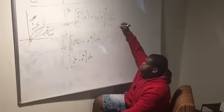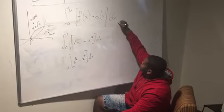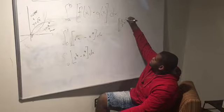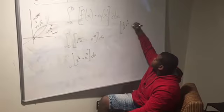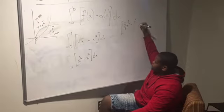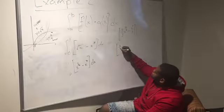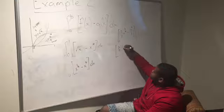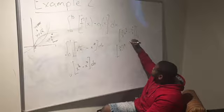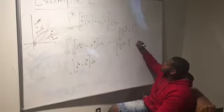Next, you want to integrate the integral. The antiderivative of x to the 1 half is 2 thirds x to the 3 halves power. The antiderivative of x cubed is x to the 4th divided by 4. Now that you have integrated, you want to plug in your limits and solve. You plug in 1 to get 2 thirds times 1 to the 3 halves power minus 1 to the 4th over 4.